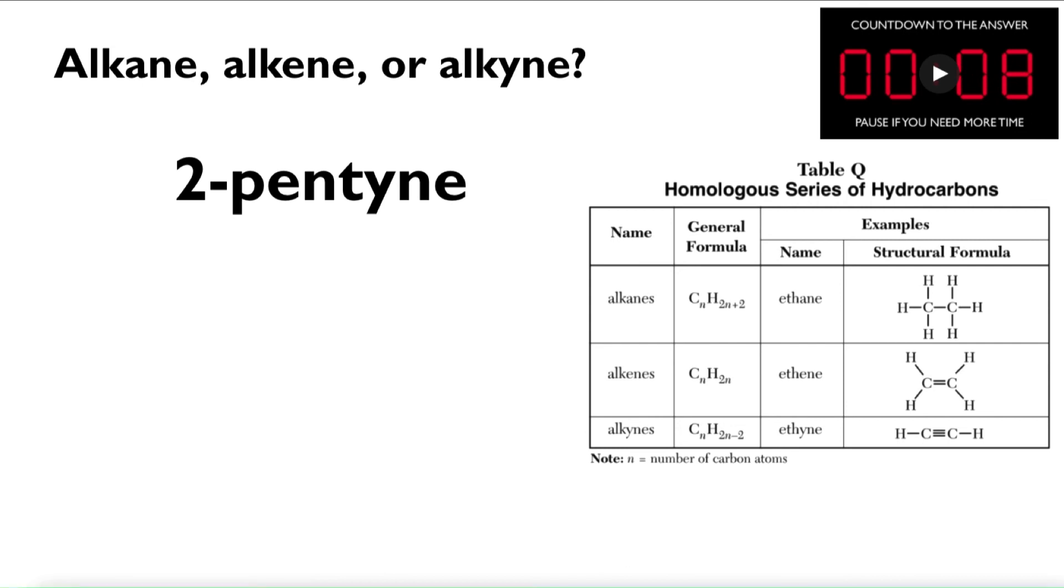Let's just look at this name and figure out alkane, alkene, or alkyne. And I'm going to set the timer to 10 seconds here. So this would be an alkyne. The giveaway is the ending of the word, Y-N-E. And just to show you, this is what this particular alkyne would look like. The second carbon in the chain, we would see a triple bond between the two carbons there. If you count up your chemical formula, you would have C5H8.